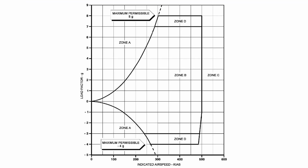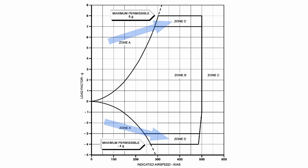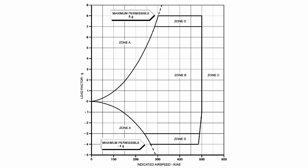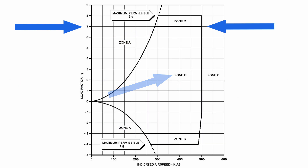Here's the V-G diagram for the MB339 trainer we've been using in this series. We can see there's a max permissible load factor of 8G. Zone D has special caveats: you cannot have any underwing weapons or fuel tanks loaded, and the tip tanks should be removed. Otherwise you're limited to zone B, which is 7G. Always check for these special rules on any aircraft you operate.